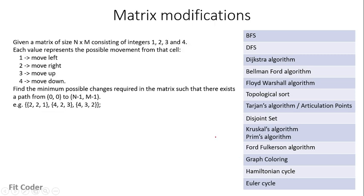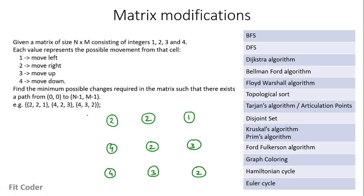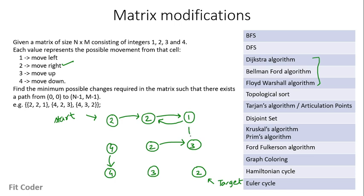The next question is matrix modifications. We are given a matrix of size n×m consisting of integers 1, 2, 3 and 4: 1 means move left, 2 means move right, 3 means move up, 4 means move down. We have to find the minimum number of changes required in the matrix so that there exists a path from the topmost vertex to the bottommost vertex. Drawing this as a graph: value 2 means move right so there is an edge to the next vertex. Value 4 means move down, value 1 means move left, and value 3 means move up.